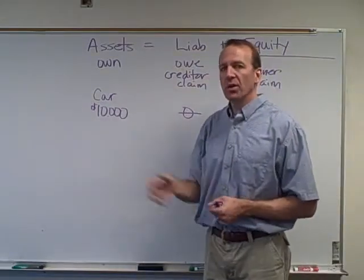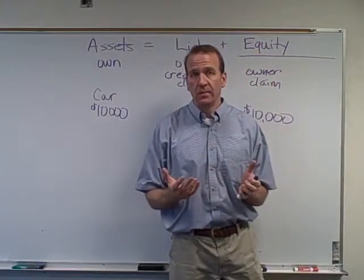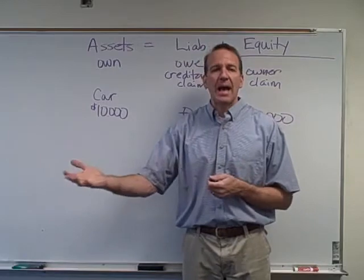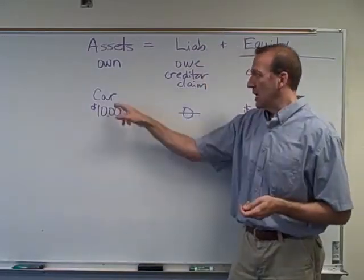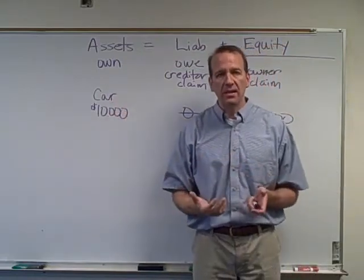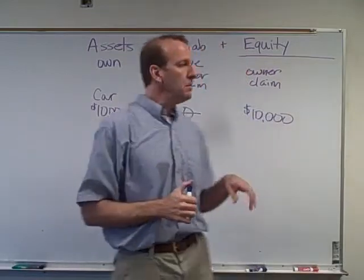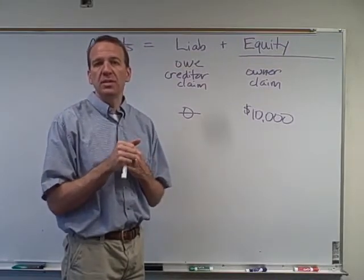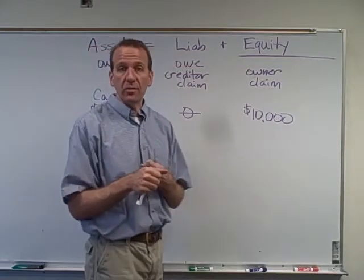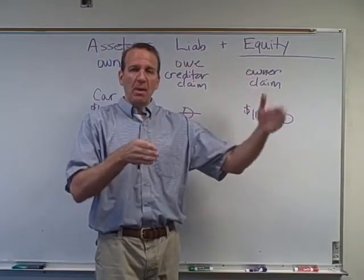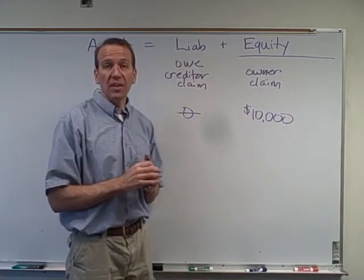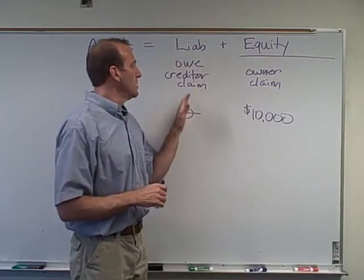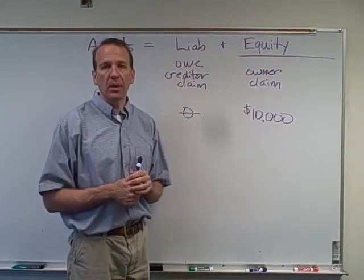Let's go over some examples of assets - things that we own. The most common would be cash: savings accounts, CDs, checking accounts, cash in the register. We also talked about cars, buildings, land, and supplies. For liabilities, examples include money we owe to the bank, money owed to the utility company, or wages owed to employees. Whenever you see the word 'payable' - wages payable, accounts payable - that means a liability. Accounts payable means we bought something on credit.